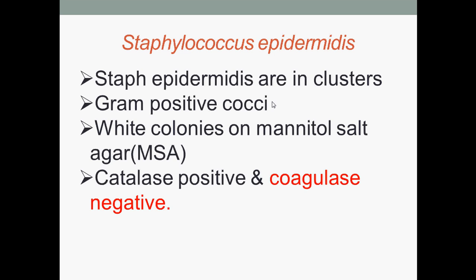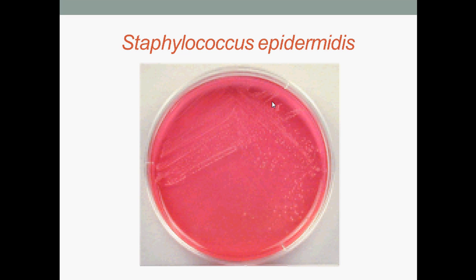Coagulase tests are used to identify whether an organism produces the exoenzyme coagulase, which causes the fibrin of blood plasma to clot. Staphylococcus epidermidis is coagulase negative, so it does not have this exoenzyme. Here is Staphylococcus epidermidis growing on mannitol salt agar — they form white colonies, as you can see.